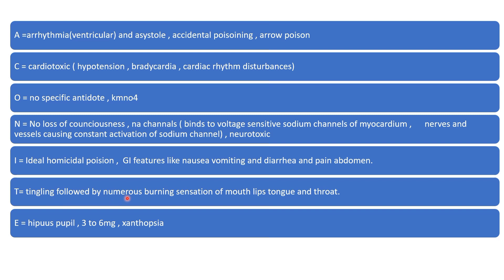'T' stands for tingling followed by numbness and burning sensation of the mouth, lips, tongue, and throat. 'E' stands for extra features, which include hippus pupil, fatal dose of 3 to 6 mg, and xanthopsia.